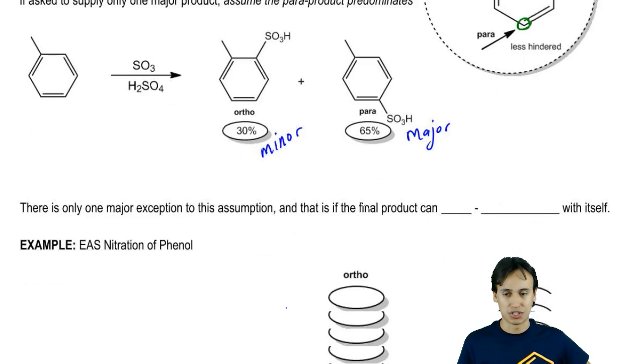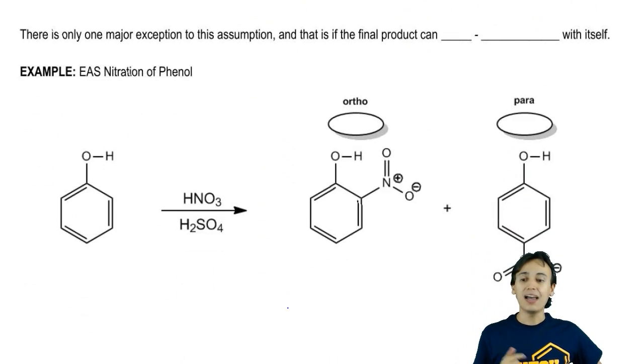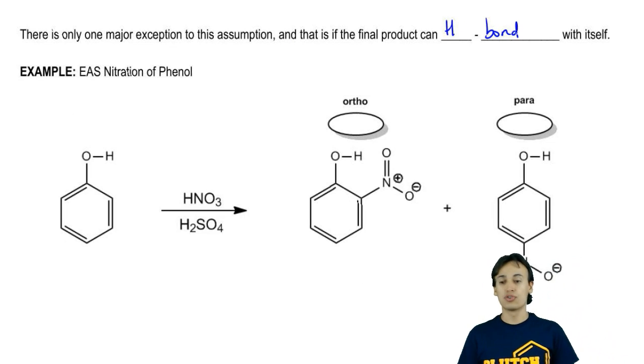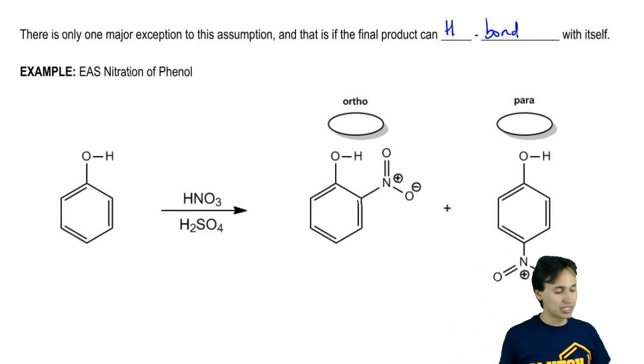That one exception is if the final product can hydrogen bond with itself. If the final product can hydrogen bond because of the orientation of the groups, then we would say that the ortho will slightly win. Here you guys can see the nitration of phenol.